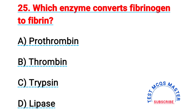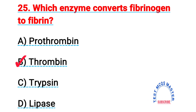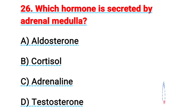Question number twenty-five: which enzyme converts fibrinogen to fibrin? The right answer is B, thrombin.